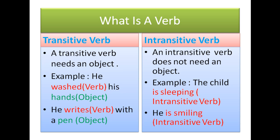Verbs are of two types: transitive verb and intransitive verb. A transitive verb needs an object — that means in a sentence where a specific object is referred to, there is also a transitive verb. For example, 'He washed his hands' — 'hands' is the object and 'washed' is the transitive verb. 'He writes with a pen' — 'pen' is the object, hence 'writes' becomes the transitive verb.